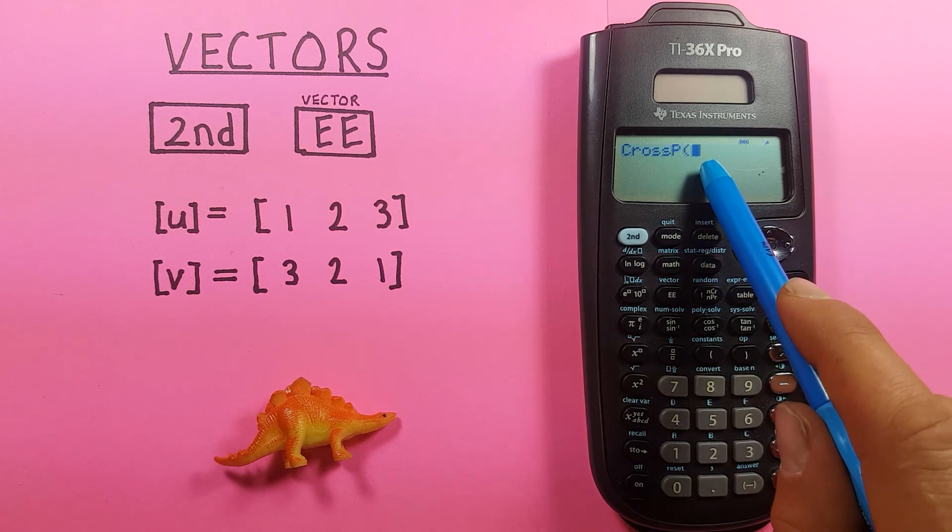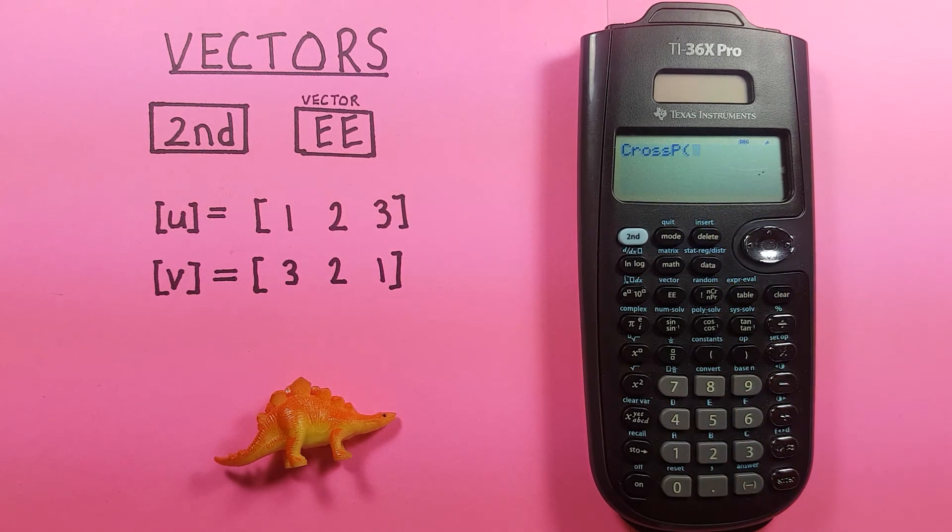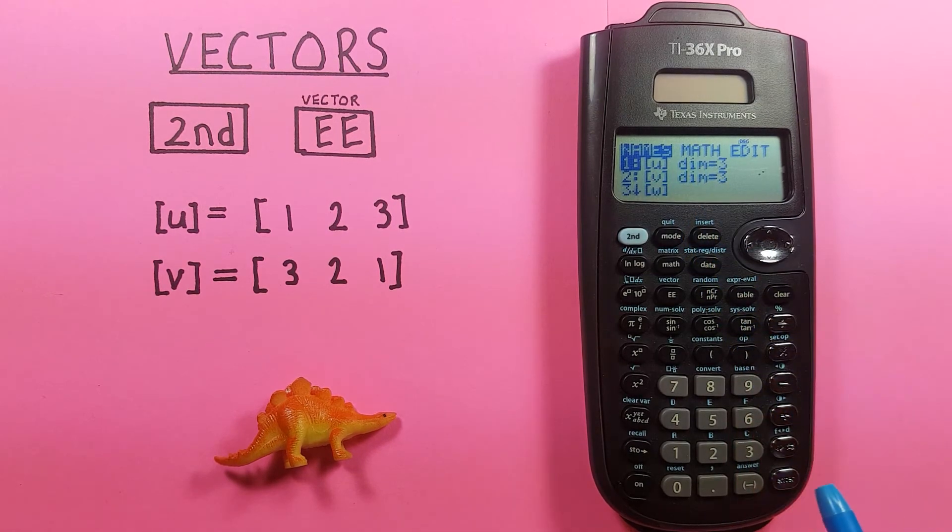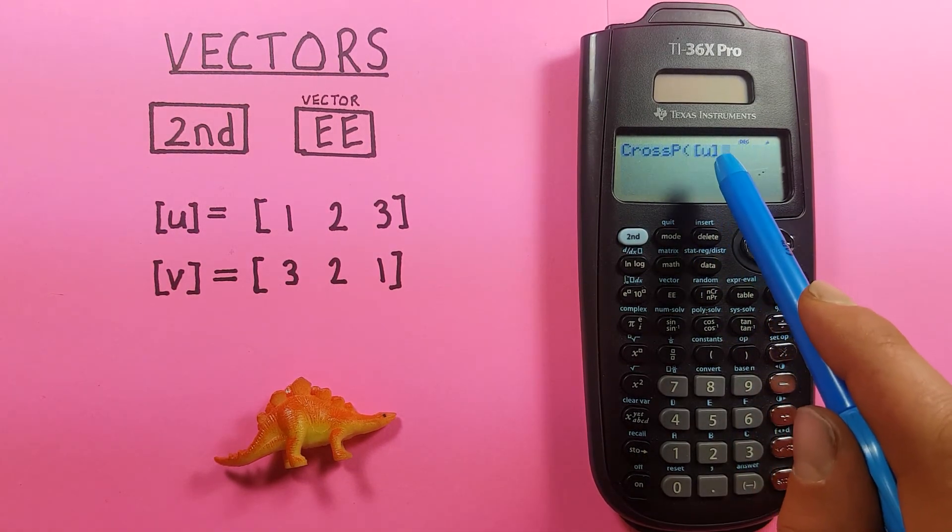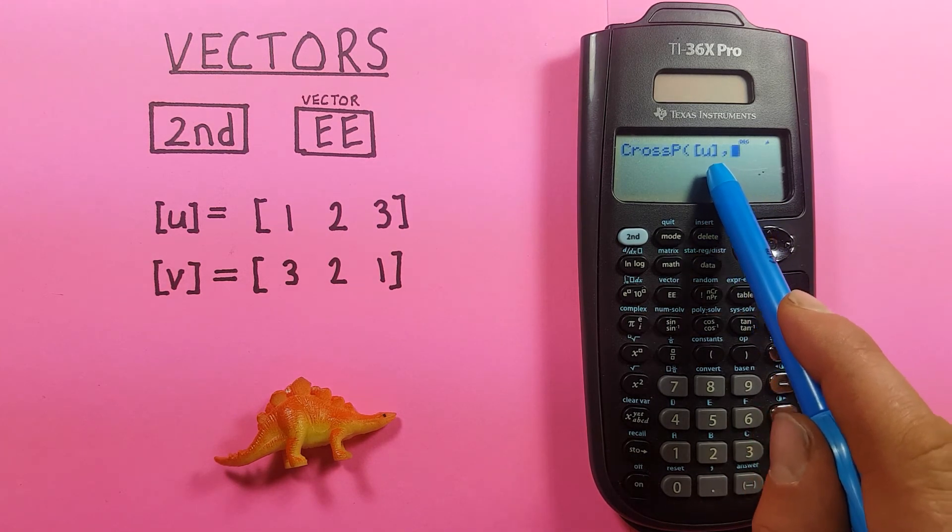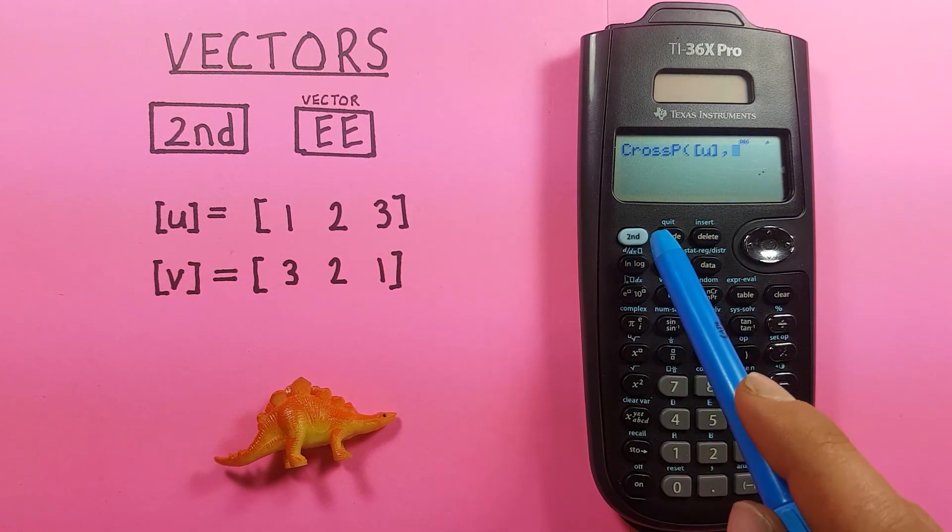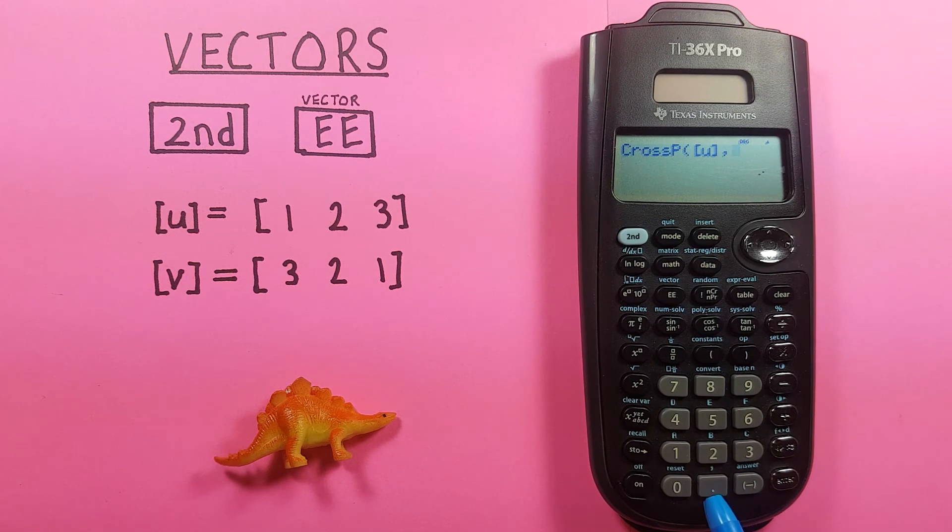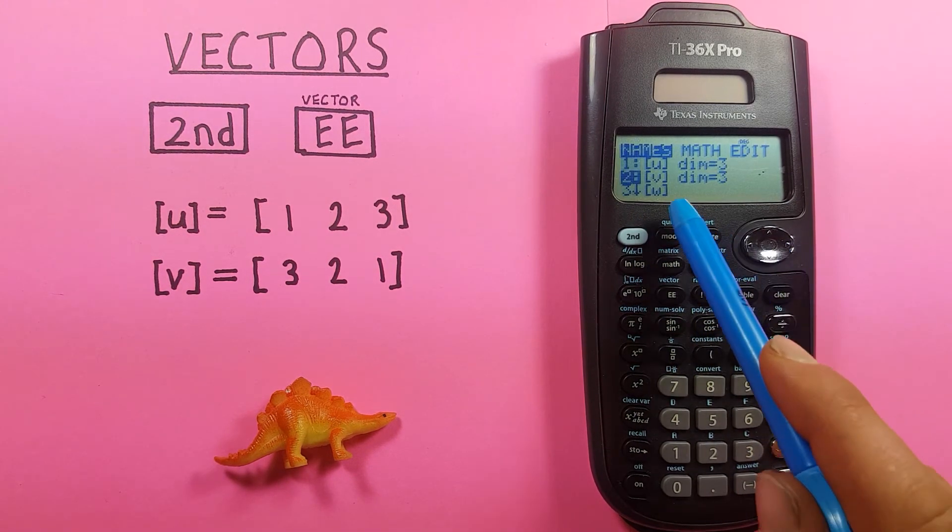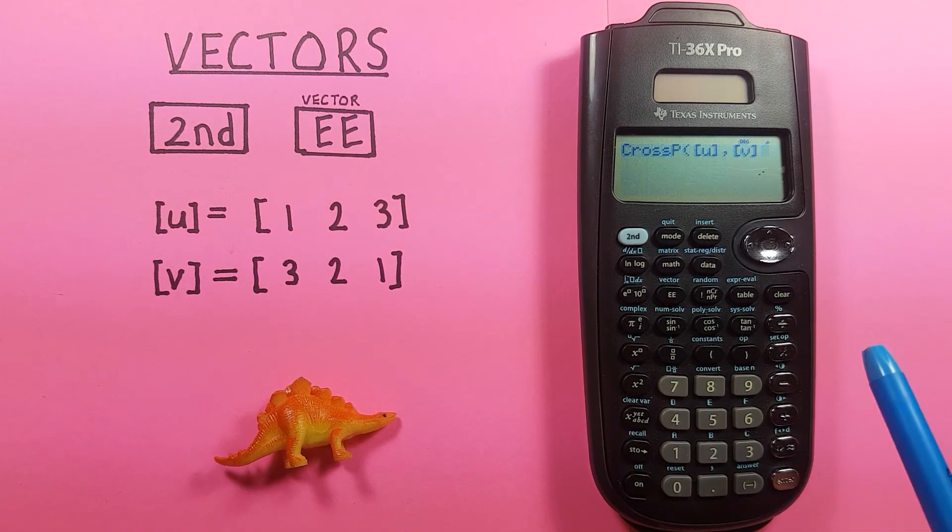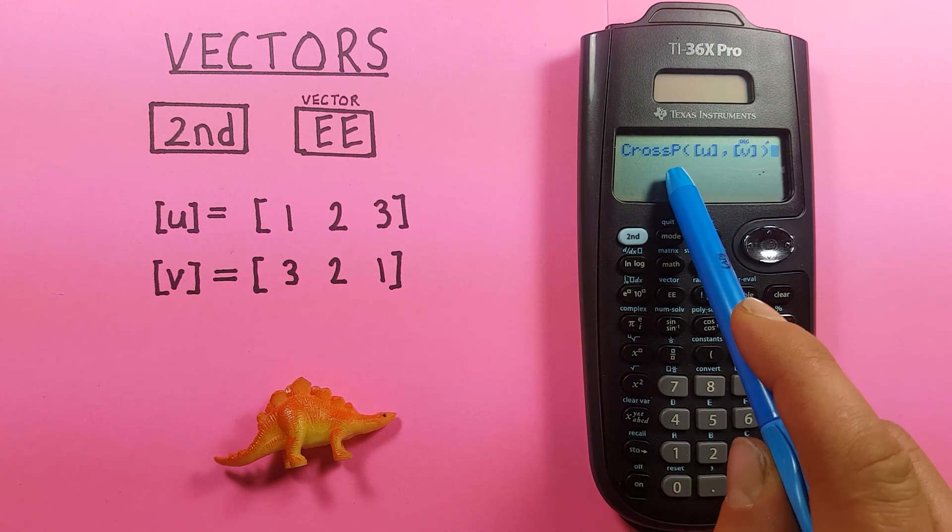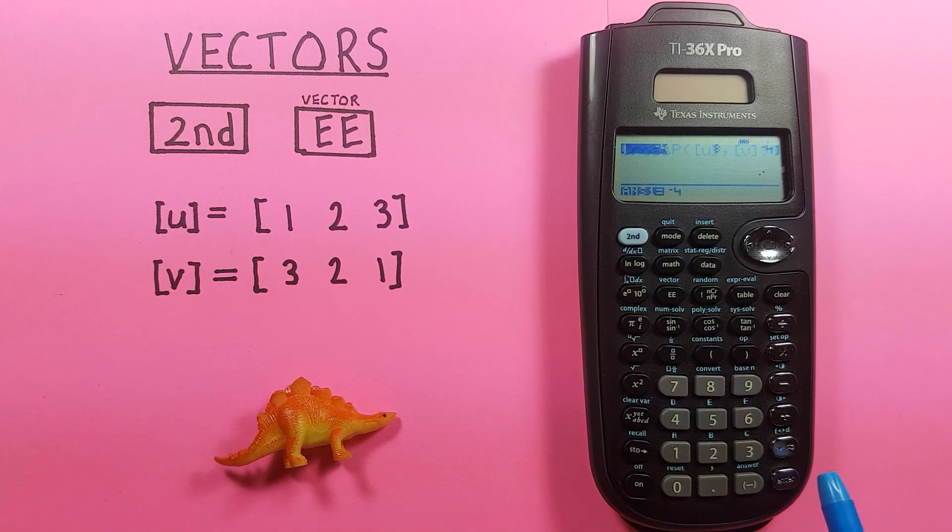We cross p equals bracket. So let's select our U vector. There we go. Put in our comma. It's very important we have the comma between our two vectors, which remember we get by pressing second function period. Back to our vector menu, highlighting our V vector. Enter. Closing our brackets. So it should look like this. And then pressing enter.